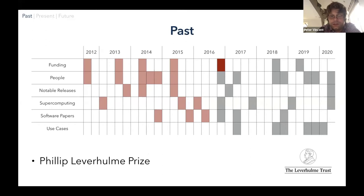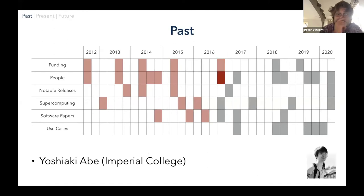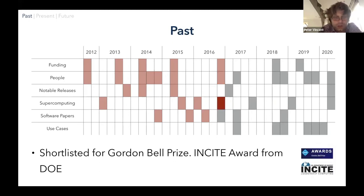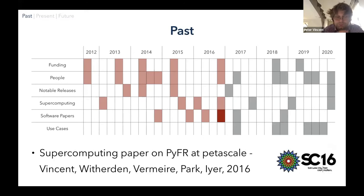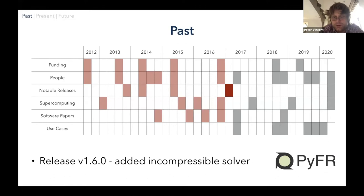Further funding from the Philip Leverhulme Foundation was received in 2016 to support development of our in-situ visualization and analysis technology. Yoshiaki joined my group at Imperial at that point and will be speaking later about low pressure turbine blade simulations — he now has a faculty position at Tohoku University in Japan. At the end of 2016, we were shortlisted for the Gordon Bell Prize, presented at Supercomputing — we didn't win, but were one of the six finalists. We also received an INCITE award from the DOE for a large compute allocation to look at turbomachinery test cases in collaboration with MTU Aero Engines on Titan.